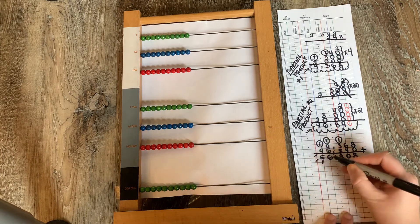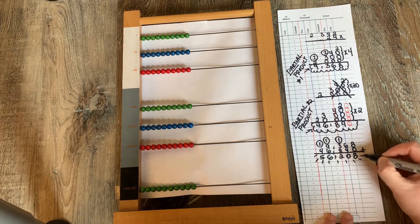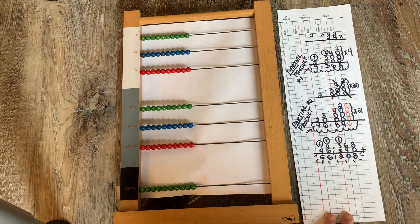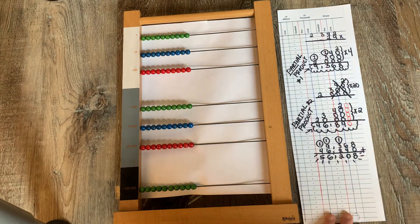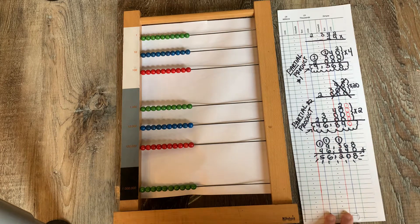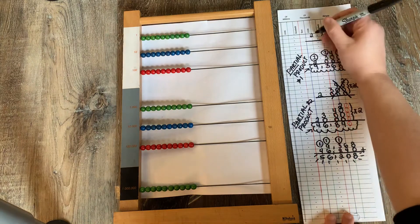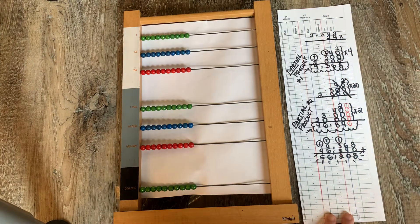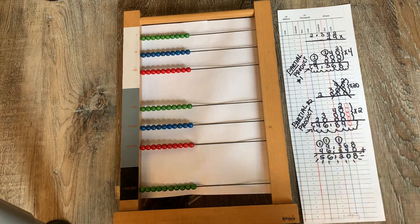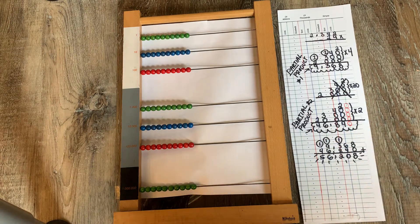This is our product, our final product, not our partial product, our final product, our final answer. So we can say that 2,342 taken 24 times gives us 56,208.